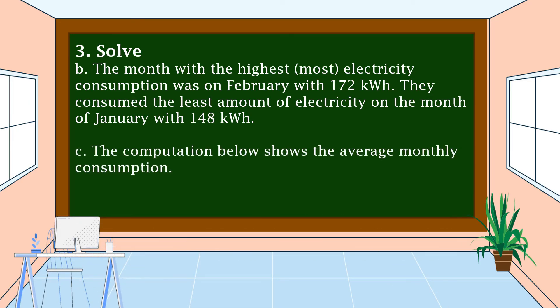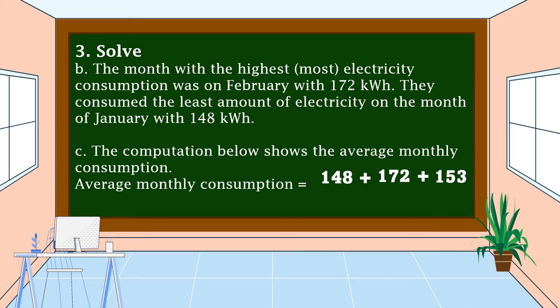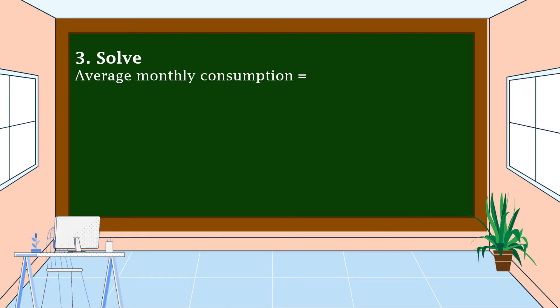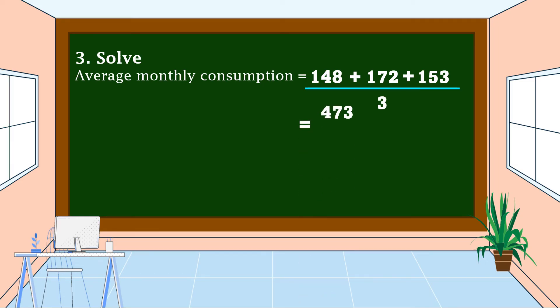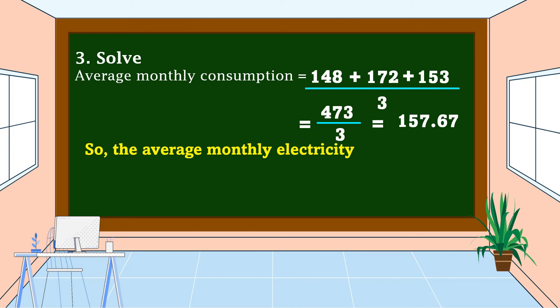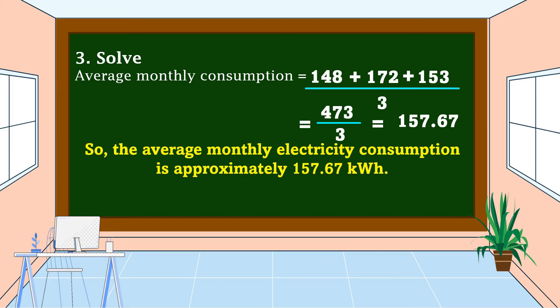For Letter C, the average monthly consumption is computed as: (148 plus 172 plus 153) divided by 3. The total is 473, and 473 divided by 3 equals 157.67. So the average monthly electricity consumption is approximately 157.67 kilowatt hours.